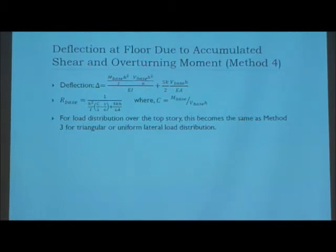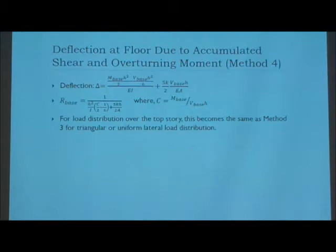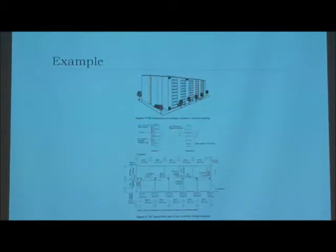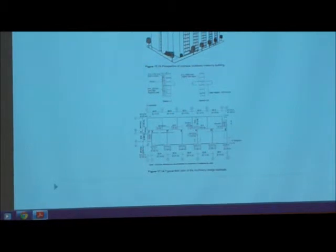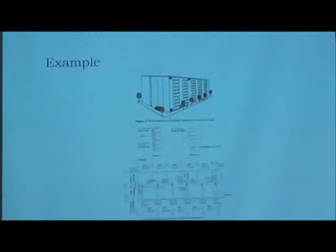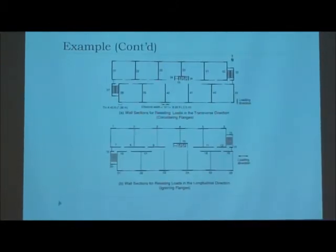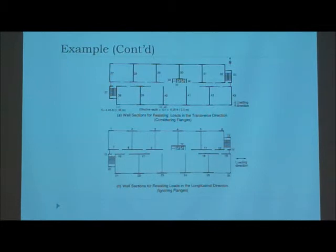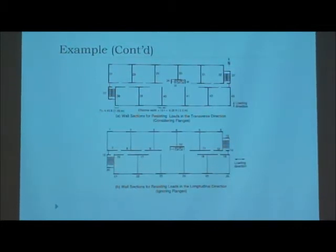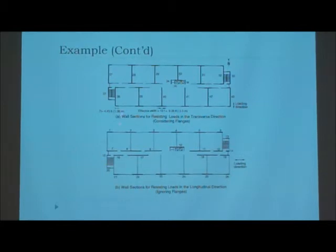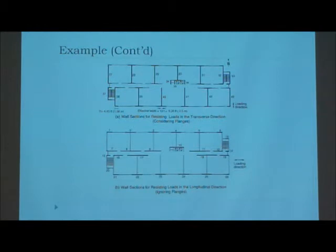One thing about this is that if you're doing load distribution at the very top story, it becomes the same as Method 3 for triangular or uniform load distribution. Here is an example — shown at the bottom — that shows the plans and the walls we're going to look at. This is the building floor plan, and that's how we'll see how to calculate the relative rigidity of the shear walls. With lateral loads, for calculations you can treat north-south and east-west loads independently, which provides a sufficient answer.